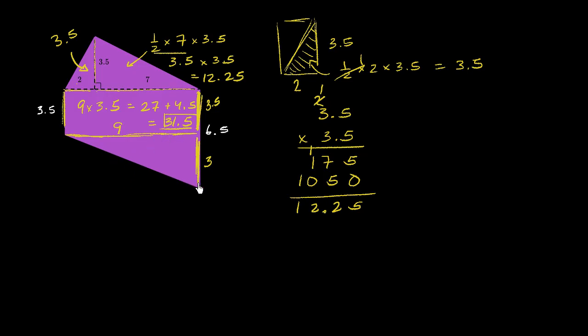And then the area of this triangle right over here is going to be 9 times 3 times 1 half. We're looking at a triangle. 9 times 3 is 27, times 1 half is 13.5.